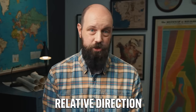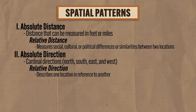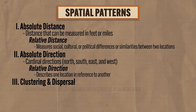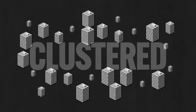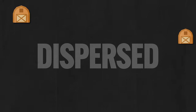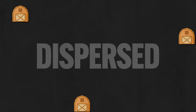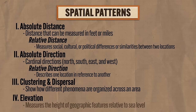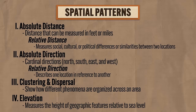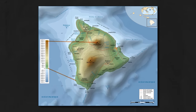But if she says take a left out of my room and right down the next hall, that's actually kind of helpful — and that's what we mean by relative direction. Now the third spatial pattern depicted on maps is clustering and dispersal, both of which show how different phenomena are organized across an area. If phenomena are clustered, they're close together, like apartment buildings in New York City. But if dispersed, they're far apart, like farms in the midwest. The fourth spatial pattern is elevation, which measures the height of geographic features relative to sea level.